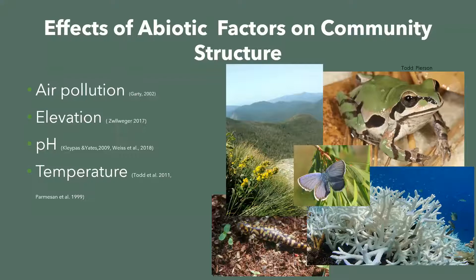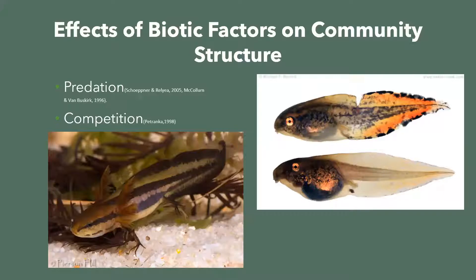Temperature has also shifted the range of 63% of 35 non-migratory European butterflies into northern, cooler climates, while only 3% of these species have shifted south. Our oceans have also increased in temperature causing coral bleaching, and coral is further impacted by increasing ocean acidity due to carbonic acid disintegrating calcium carbonate skeletons. Unfortunately, there is already evidence that freshwater bodies are becoming more acidic in the same way.